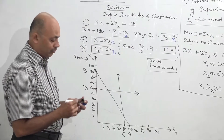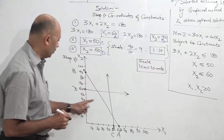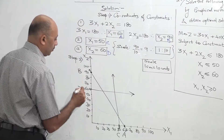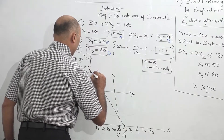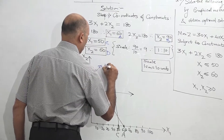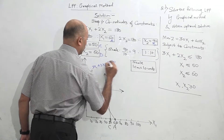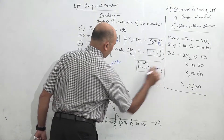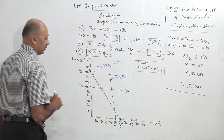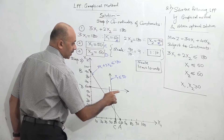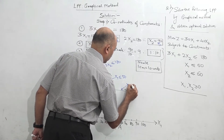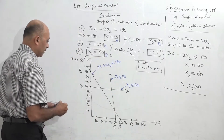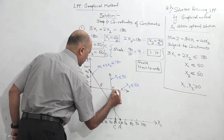You should always remember that if we have three constraints, we should have three lines on the graph. We had three constraints, so now we have three lines on the graph. For every line, you write the original equation of the constraint. Line AB: 3x1 plus 2x2 less than or equal to 180. Point C: x1 less than or equal to 50. Line D: x2 less than or equal to 60. Always write the equations on the graph.